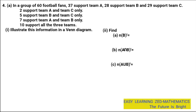Question 4A was as follows. In a group of 60 football fans, 37 support team A, 28 support team B, and 29 support team C. 2 support team A and team C only. 5 support team B and team C only. 7 support team A and team B only. 10 support all 3 teams.